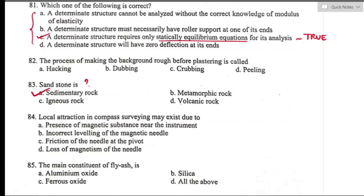Question number eighty-four: local attraction in compass surveying exists due to the presence of magnetic substances such as iron pipes, steel pipes, vehicles, etc. near the instrument. This causes the magnetic needle to be constantly prevented from pointing towards magnetic north. Option A is the right answer.